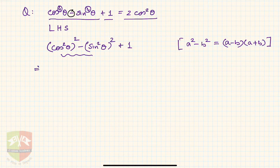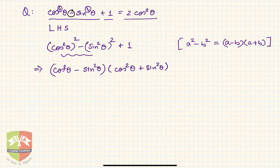Hence the LHS will become (cos²θ - sin²θ)(cos²θ + sin²θ). Please don't get confused because it is square of square.